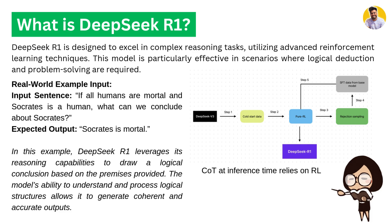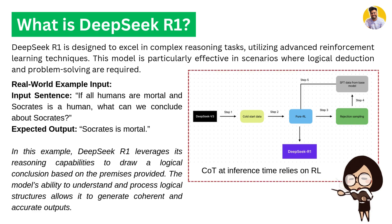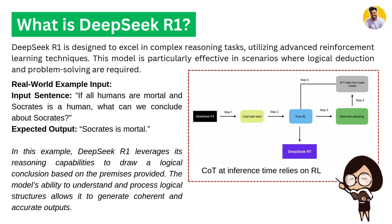This diagram shows the training process: R1 is derived from DeepSeek V3 using reinforcement learning and supervised fine-tuning techniques. Reinforcement learning is used because at inference time it uses chain-of-thought reasoning, and because of chain-of-thought it needs to learn at inference time to provide the best reasoning possible.